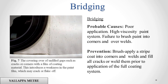Bridging. Probable causes: poor application, high viscosity paint system, failure to brush paint into corners and over welds. Prevention: brush apply a stripe coat into corners and welds and fill all cracks or weld them prior to application of the full coating system.